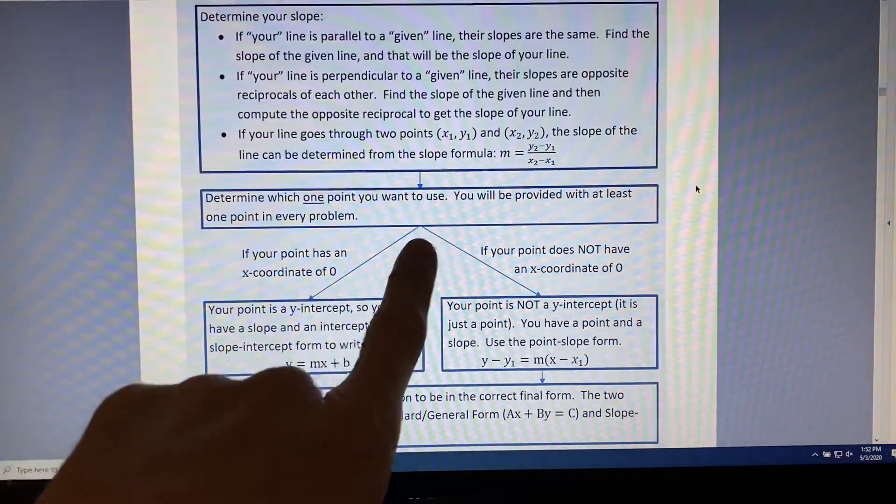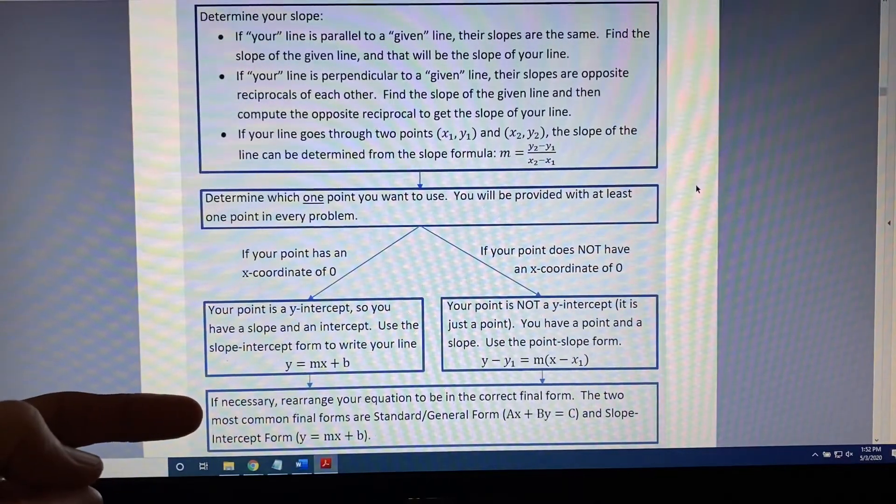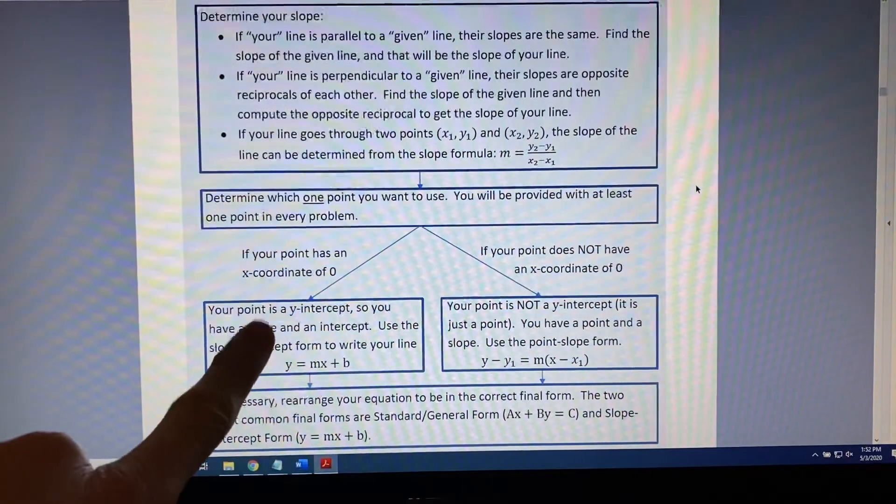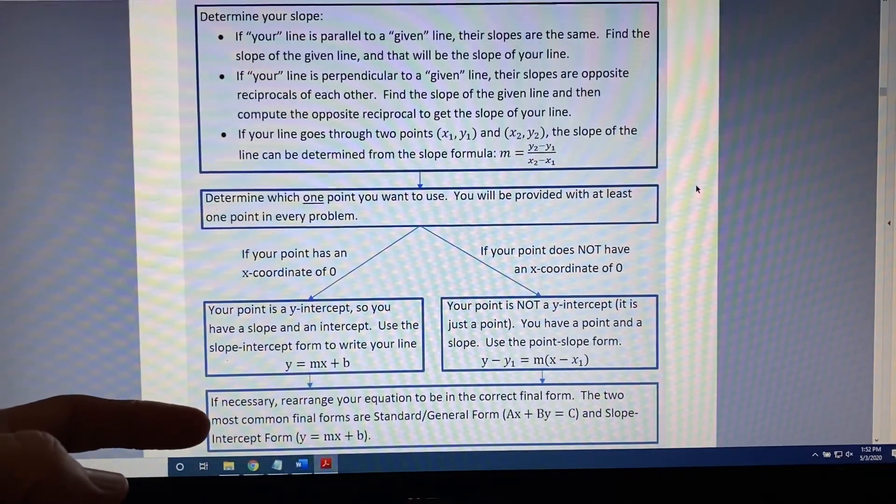Now, regardless as to whether you took the left or the right path, now look at the instructions for the problem. If they say that your final answer needs to be in a different form than the one you have as of the end of this box, or the end of this box, then rearrange your equation to be in the correct form.